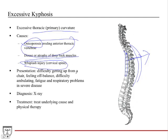Presentation includes difficulty getting up from a chair because they're hunched over, feeling off balance due to bad posture, and difficulty ambulating. Fatigue and respiratory problems can also develop because the ribs articulate with the thoracic spine and the lungs sit inside. In serious cases, the curvature can cause compression affecting the dynamics of the lungs and impact breathing.